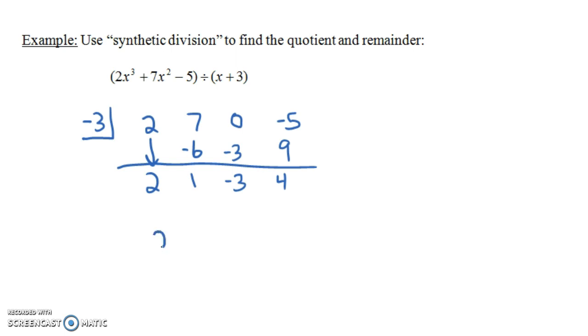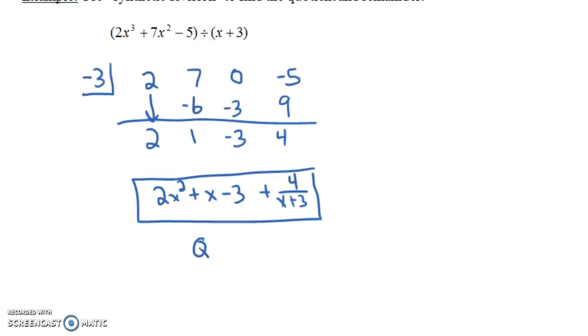And so our final answer is 2x squared plus 1x minus 3 plus 4 over x plus 3. This is the exact same answer that you'd have gotten if you had done long division for this problem. But notice it's a lot less writing. There's a lot less x's involved. And it seems like it's less prone to making a mistake doing this synthetic division. Again, though, the only drawback is that your divisor ends up having to be of this form x plus a number or x minus a number. Now, again, if we were to write this as the quotient, the q of x would be the 2x squared plus x minus 3. And the remainder, the r of x, would be 4.